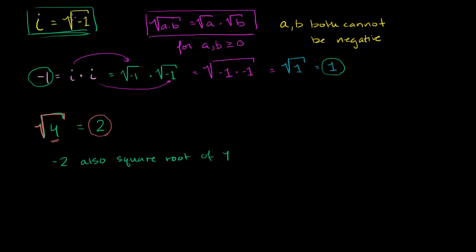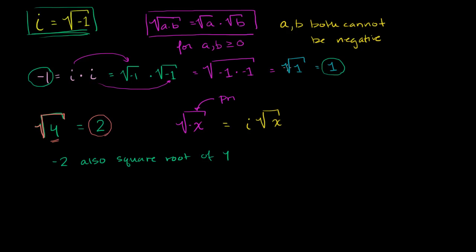When you start thinking about taking square roots of negative numbers, or imaginary and complex numbers, you have to expand the definition of what this radical means. When you are taking the square root of any negative number, you're really saying that this is no longer the traditional principal square root function — you're now talking about the principal complex square root function, defined for complex inputs, and can also generate imaginary or complex outputs. And if you assume that, then straight from this you get that the square root of negative x is going to be equal to i times the square root of x. And this is only true when x is greater than or equal to 0.